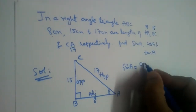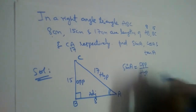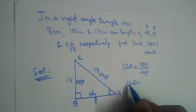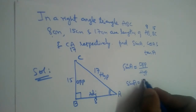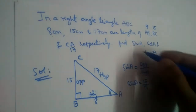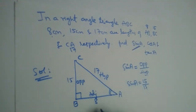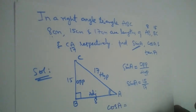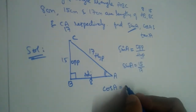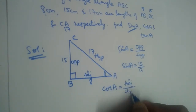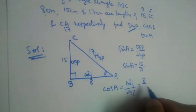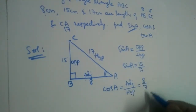Sine formula is opposite divided by hypotenuse, so sin A equals opposite side 15 divided by hypotenuse 17. Now for cos — the formula is adjacent by hypotenuse. The adjacent side here is 8, divided by hypotenuse 17, so cos A is 8 by 17.